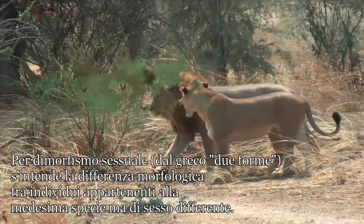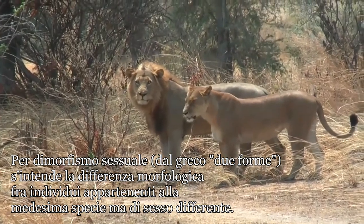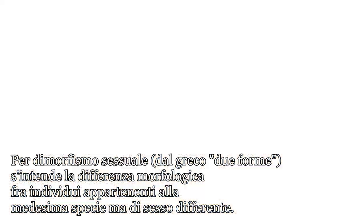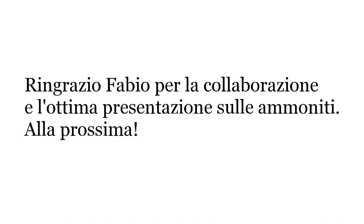Un'altra caratteristica fondamentale delle ammoniti è il dimorfismo sessuale. Esse presentavano sulla camera d'abitazione un rostro, che poteva essere più o meno sviluppato in base al sesso: nei maschi era molto più sviluppato e marcato, simile a una sorta di corno sotto la camera d'abitazione. Credo di aver detto tutto, quindi vi saluto, e può essere che ci rivedremo ancora.